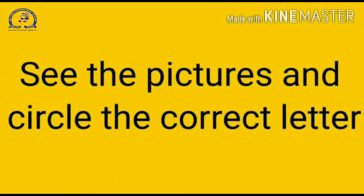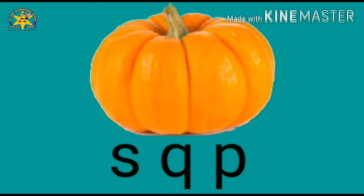Children, now let's move to the next question. See the pictures and circle the correct letter. Children, what's this? You are right! It's a pumpkin! Pumpkin! Now children, tell me what's the beginning sound of the word pumpkin? Correct! P! Now we just have to circle the letter P. Very good children!